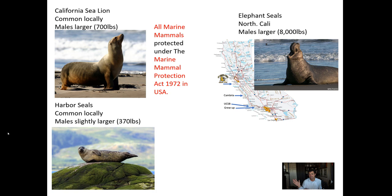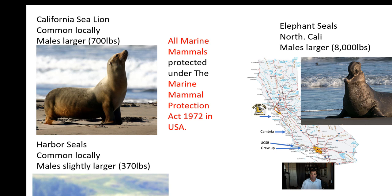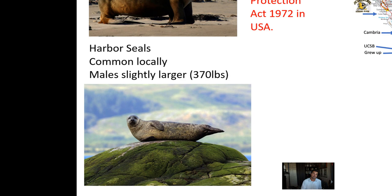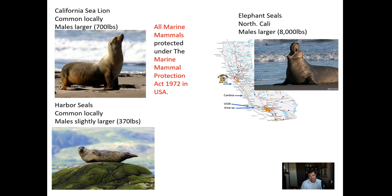Two species are common right here in Southern California. The California sea lion is very common locally — males get as large as 700 pounds, and males are larger than females. Harbor seals are also common locally, with males weighing about 370 pounds — again slightly larger than the females. California sea lions are roughly twice the size of harbor seals.